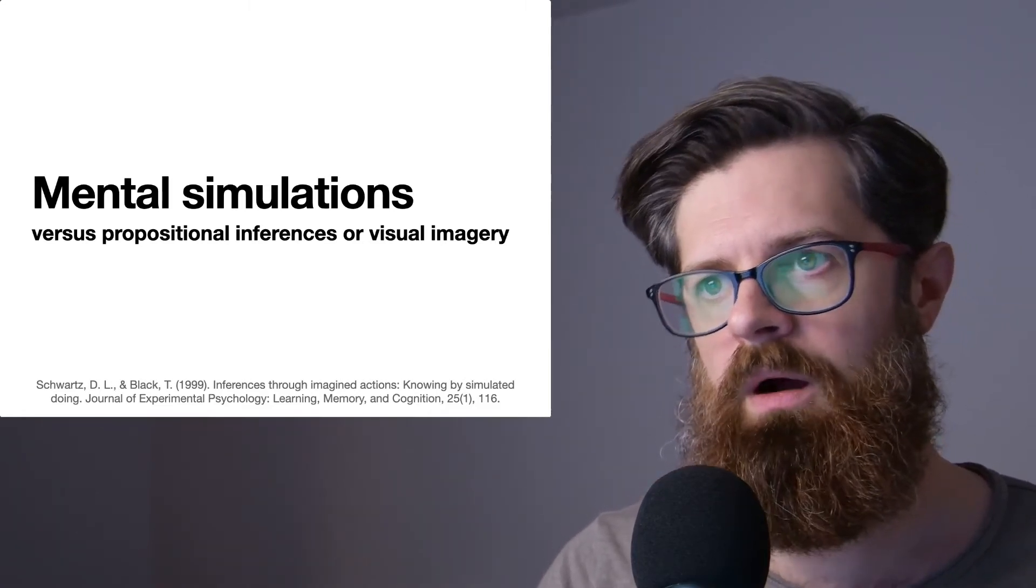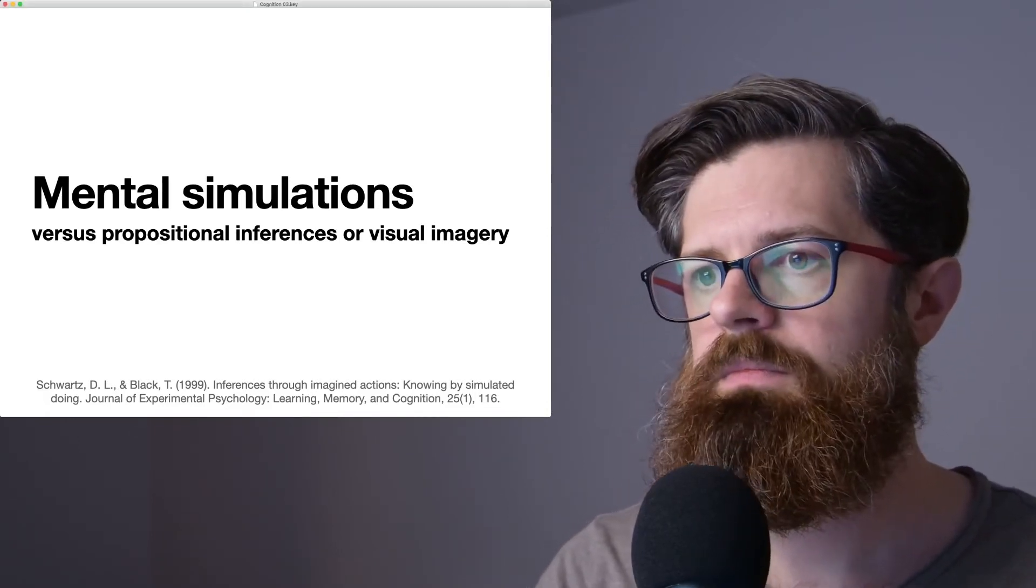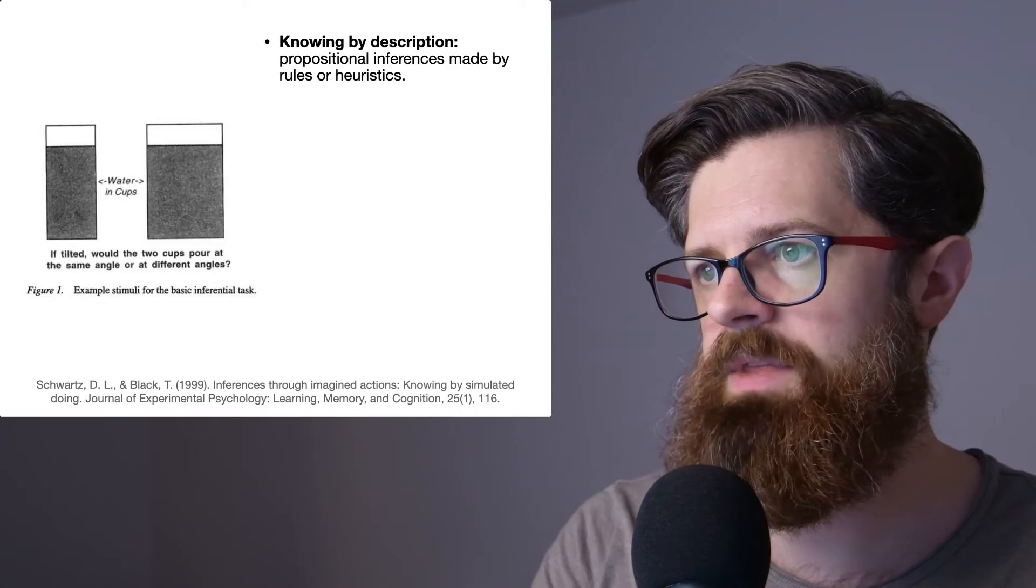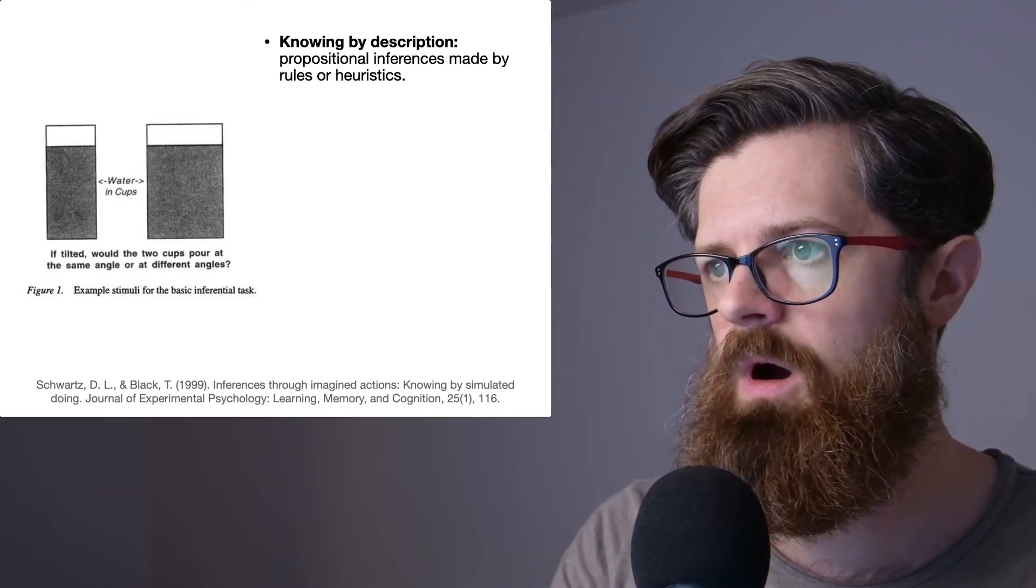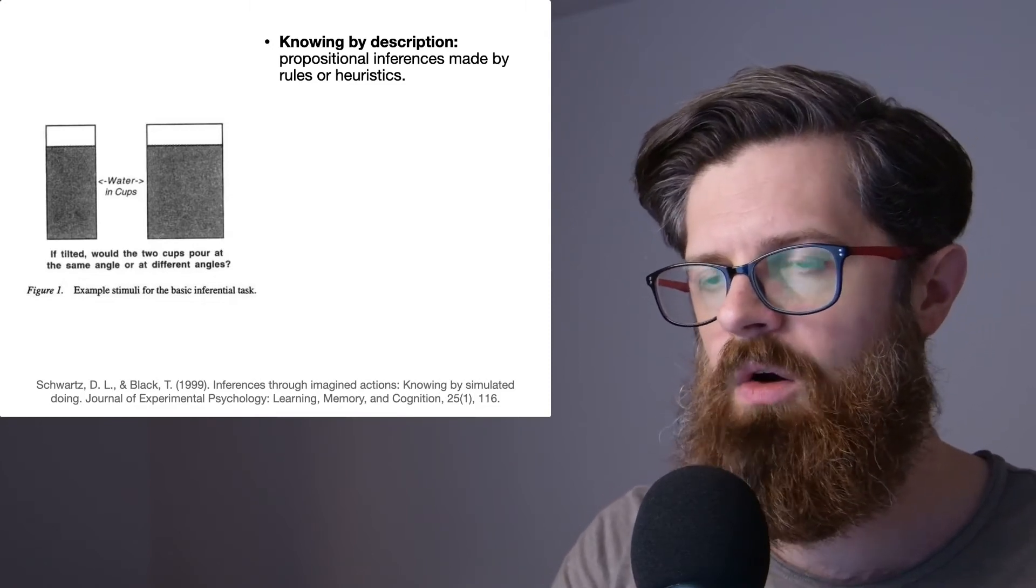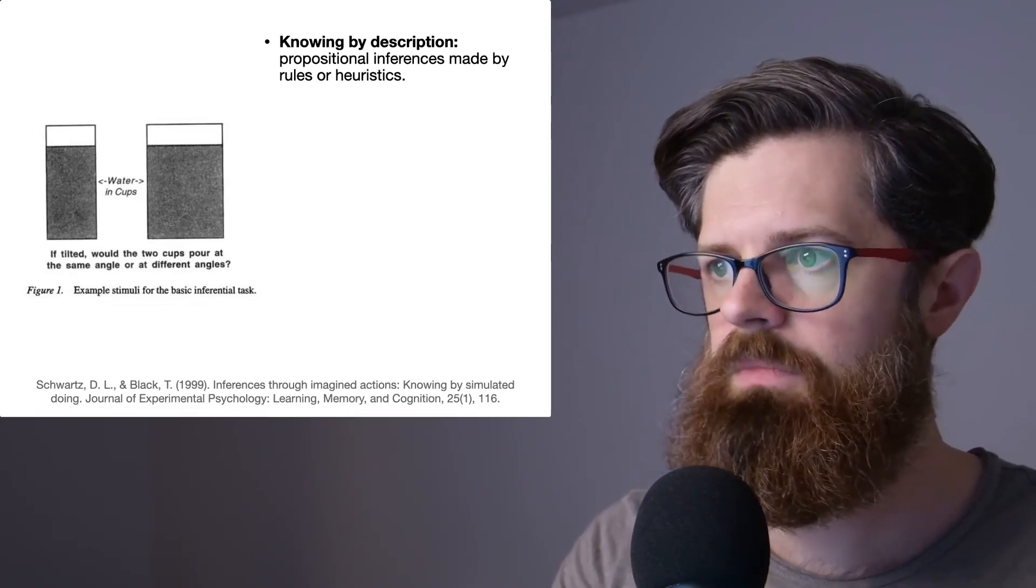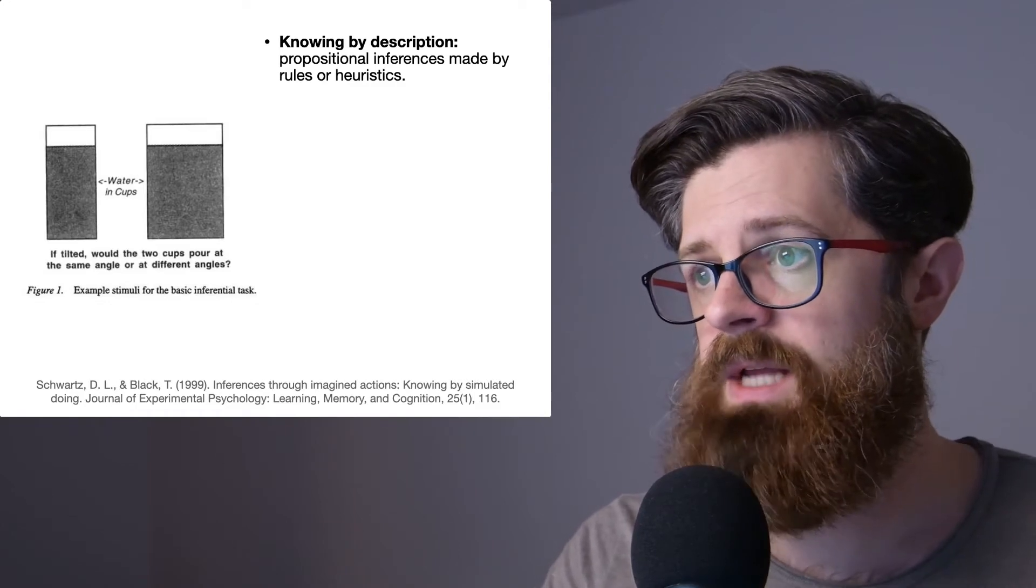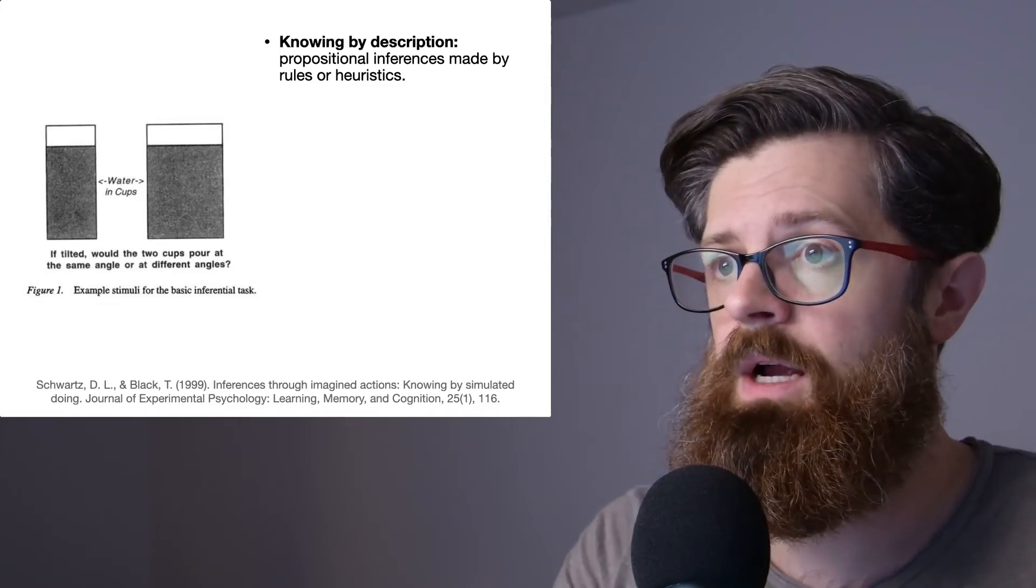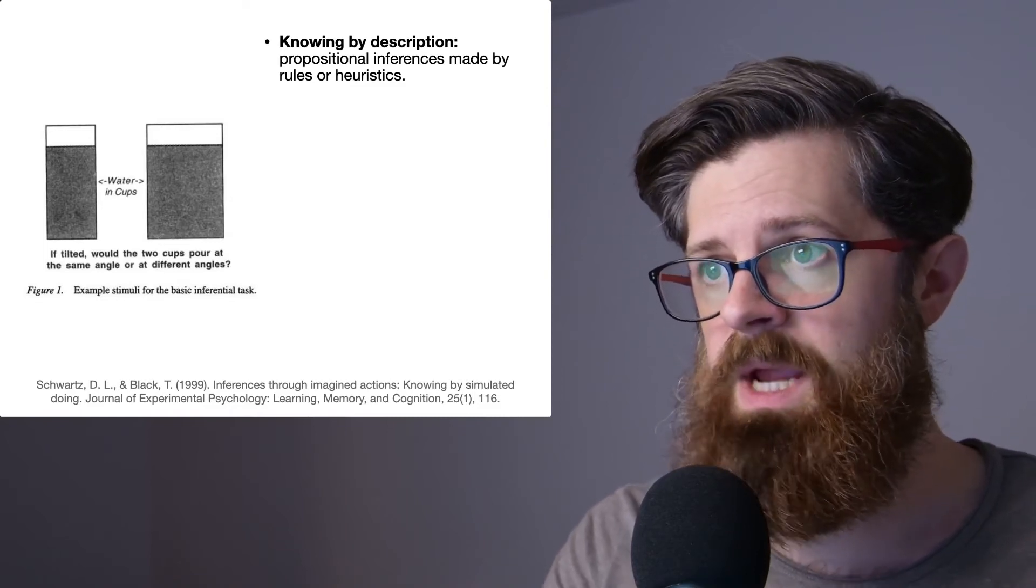Now in this paper they really examine different types of things. So what they do is they base their experiments on this idea of the tilting of cups with water, and so we can see a schematic representation here of a narrow cup and a wide cup with a certain amount of water in them. And so in this particular one it's saying if tilted, would the two cups pour at the same angle or at different angles. And so their five experiments all involve variations upon this basic type of theme.